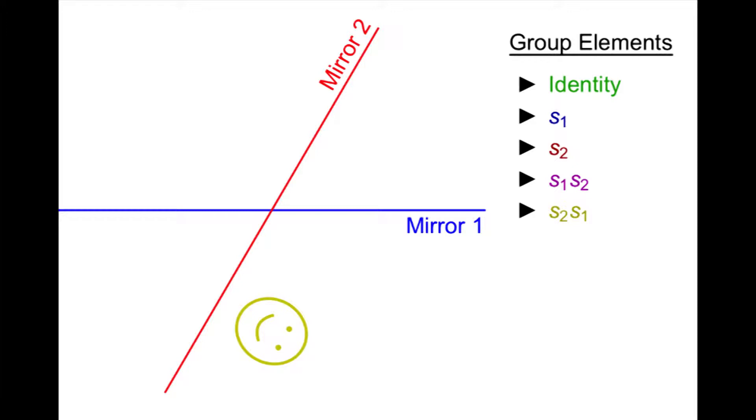How about sequences of three reflections? Well, we still have to alternate between our generators if we want to get new elements. So we have two possibilities: S1, S2, S1, or S2, S1, S2.